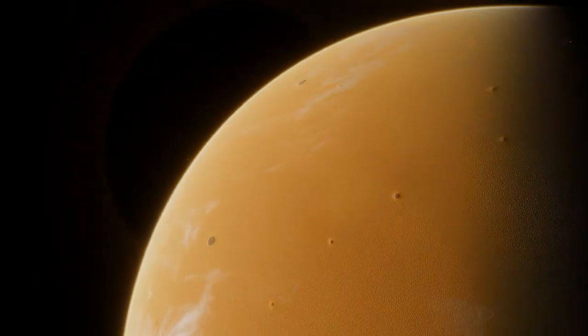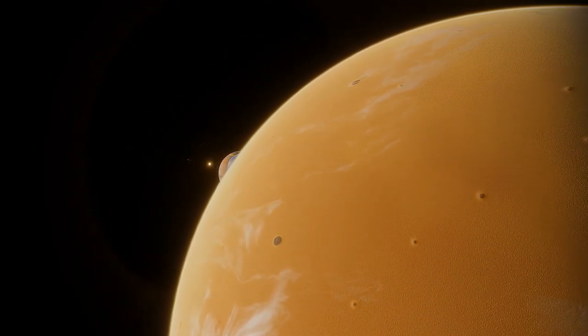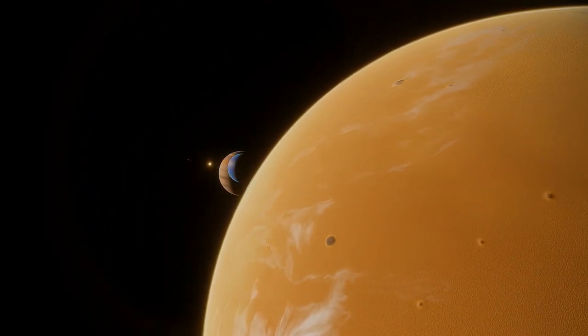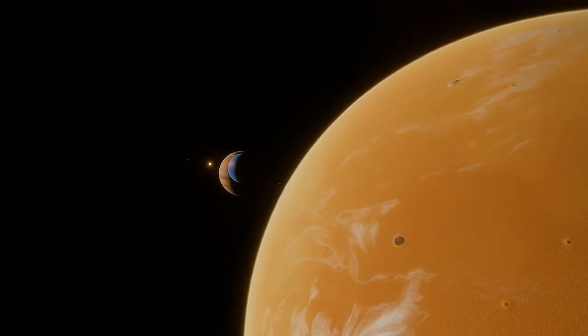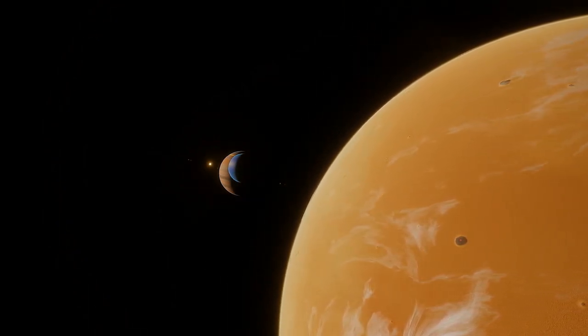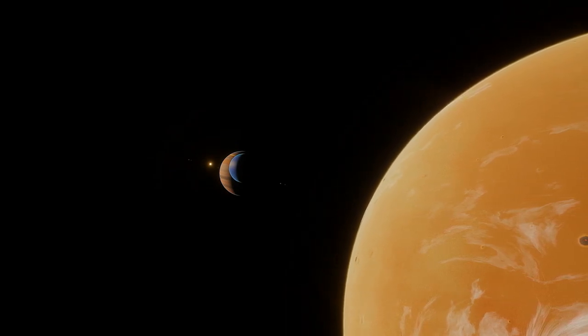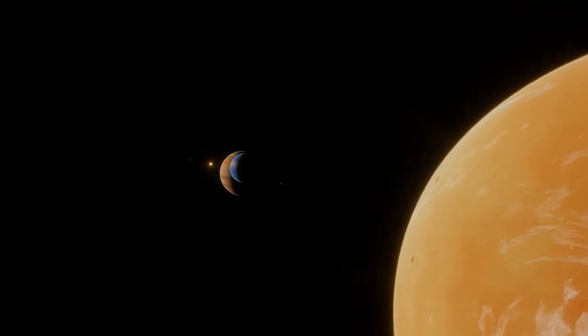Scientists spent a lot of time arguing over what a planet actually is. In 2006, they came up with a definition. They said a planet must do three things. The first thing might seem obvious: it has to orbit around the sun.